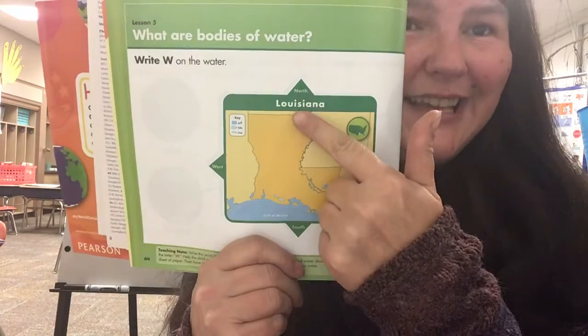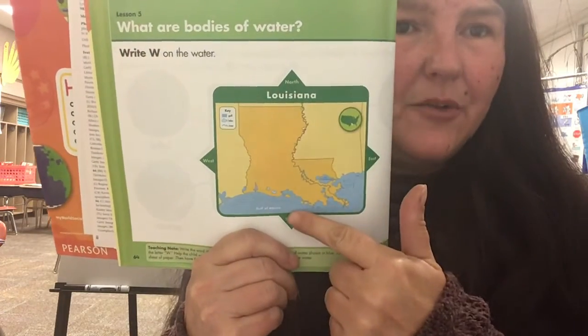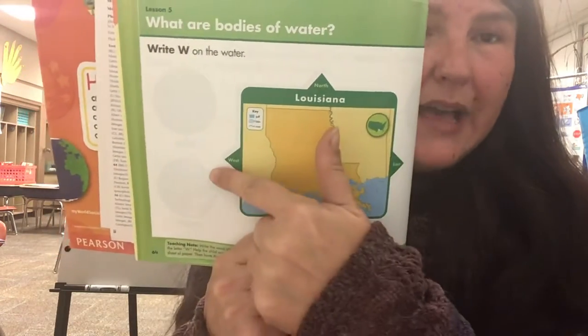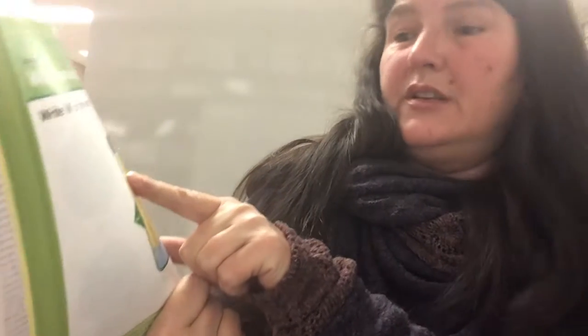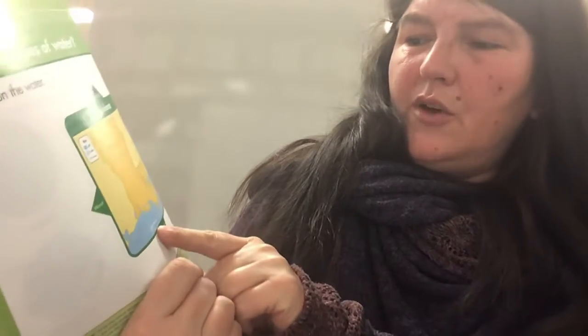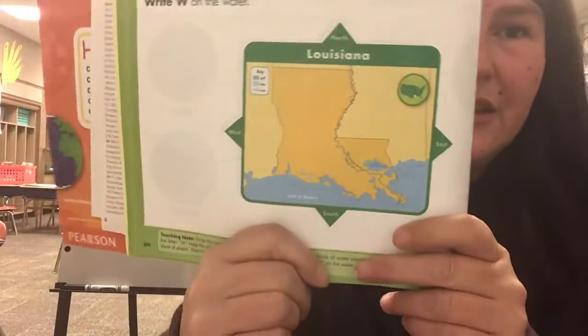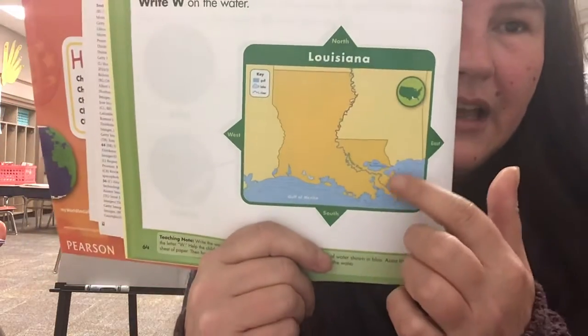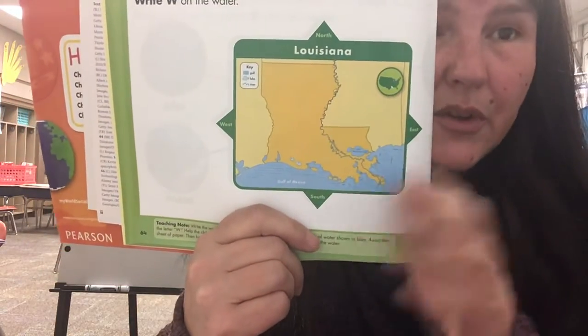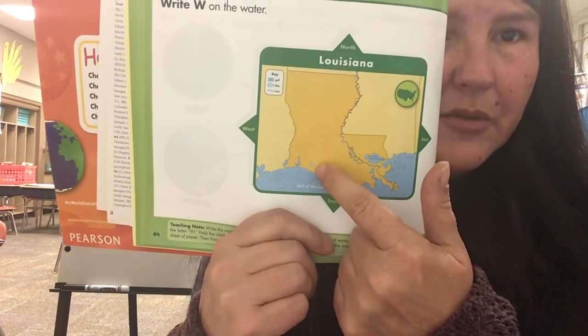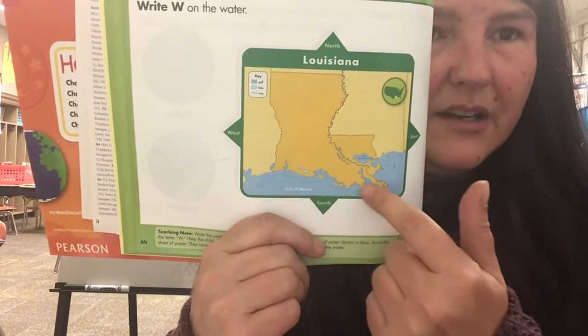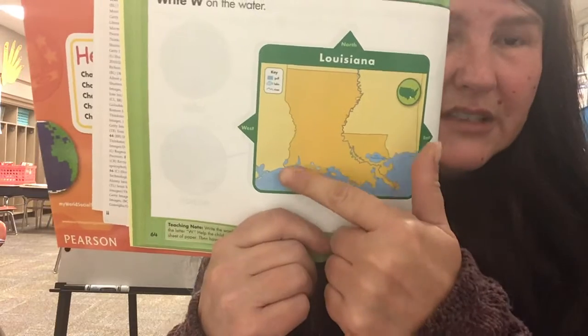On page 64 you have another map, and this is a map of a state called Louisiana. You see north, south, east, and west. Your key shows the Gulf, a lake, and a river. You're going to be looking at this area and writing the letter W when you see water — so you'd write a W here, W here, W here.